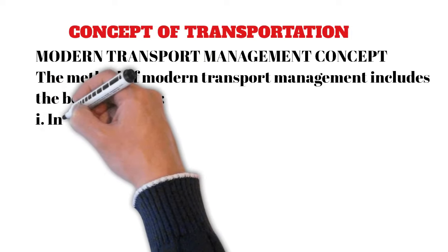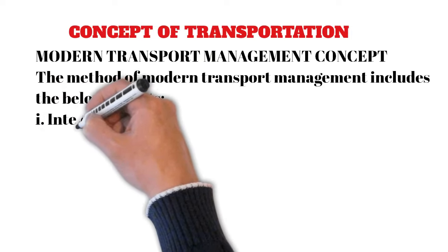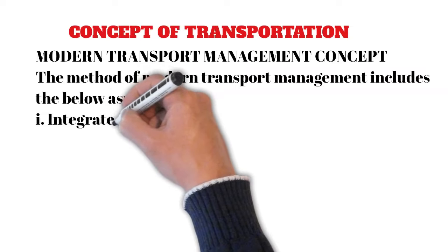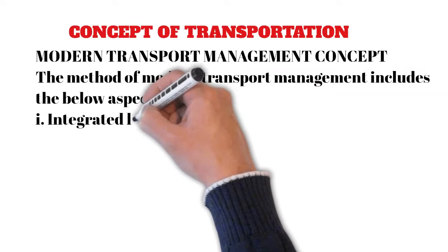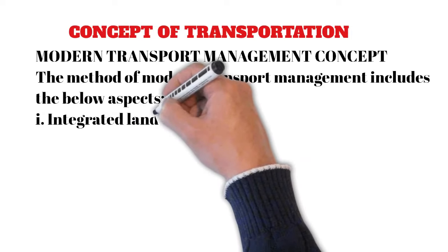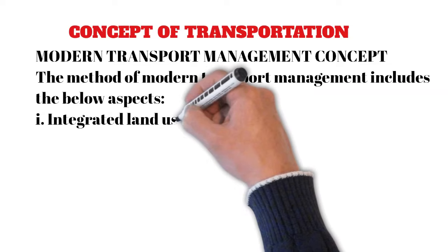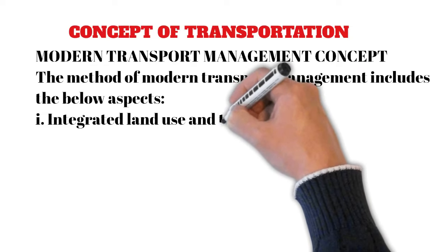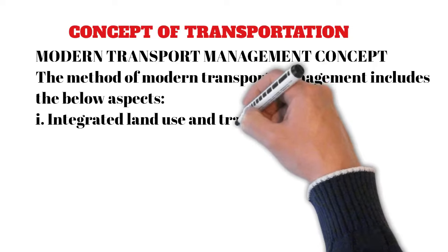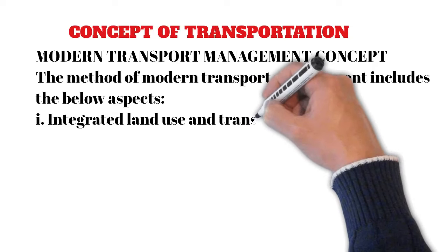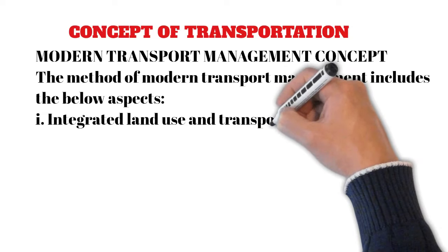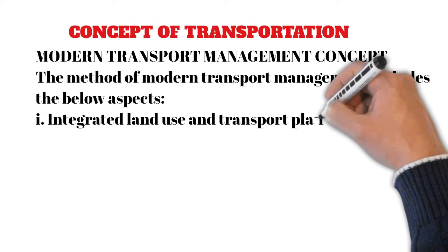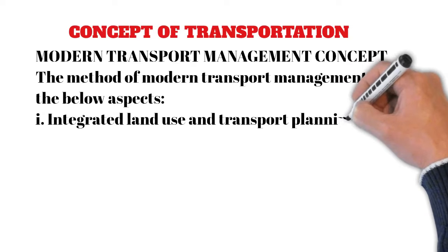Integrated land use and transport planning: For effective reduction of the adverse impacts of the current transportation system, it is important to influence future and existing transportation and land use development patterns. Once land use and transportation are integrated, there will be a possible increase in accessibility without any need for automobile dependency.